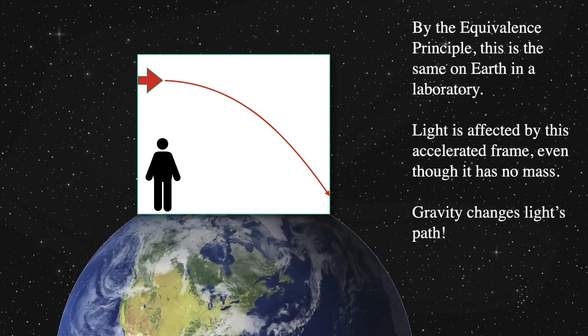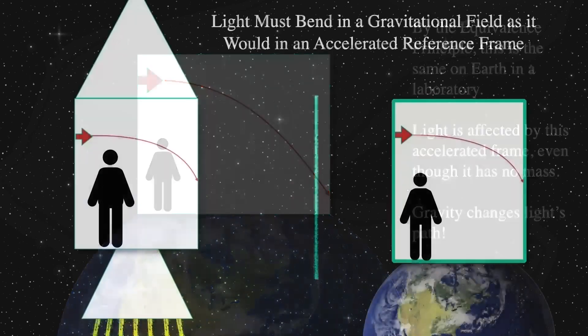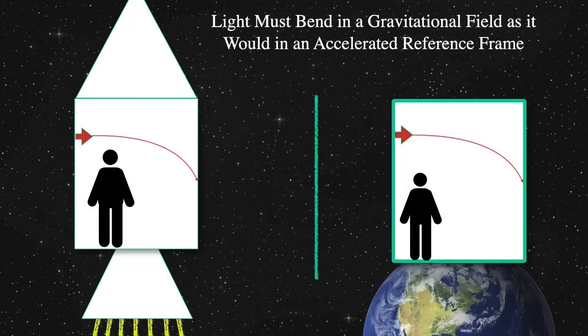But by the equivalence principle, and you knew this was coming, the equivalence principle states that the same thing would happen on Earth in a uniform gravitational field. Light's path, therefore, will be bent by a gravitational field in exactly the same way as if it were in an accelerating reference frame. There is no difference.